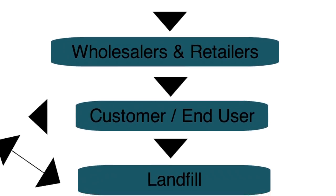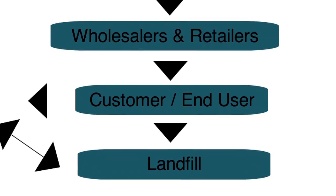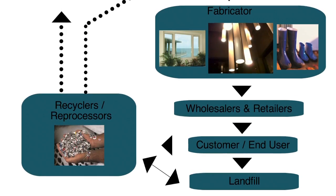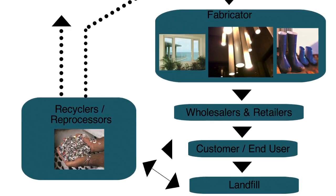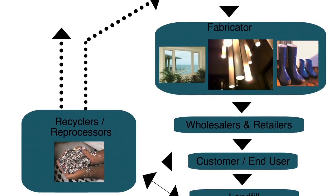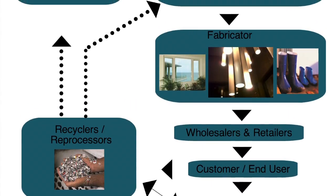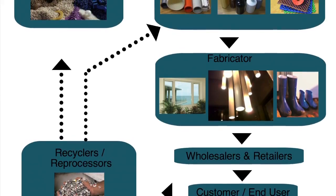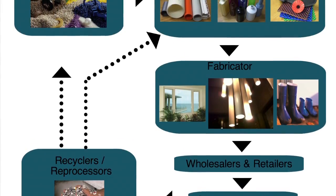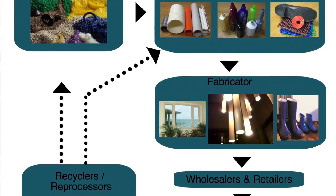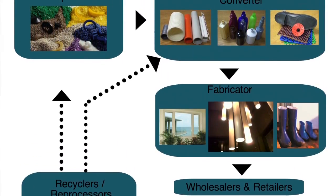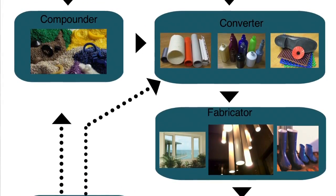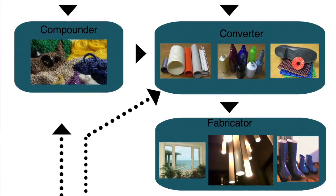The majority of PVC products are in service for at least 15 years and in many cases, such as products for construction, up to 100 years. At the end of their useful life, products can be sent to recyclers for reprocessing so that the material can be reintegrated into the supply chain through reuse by converters or compounders.